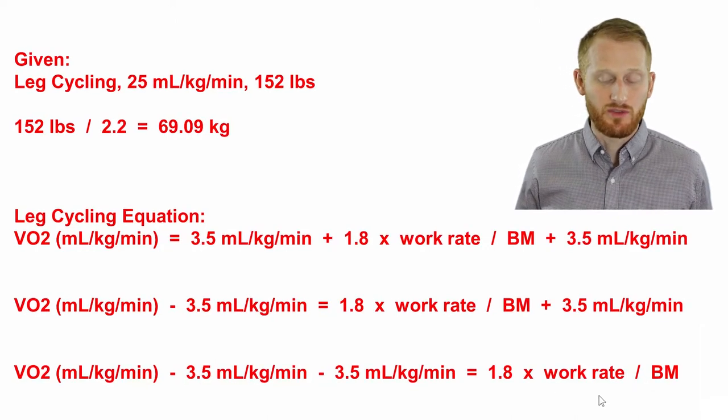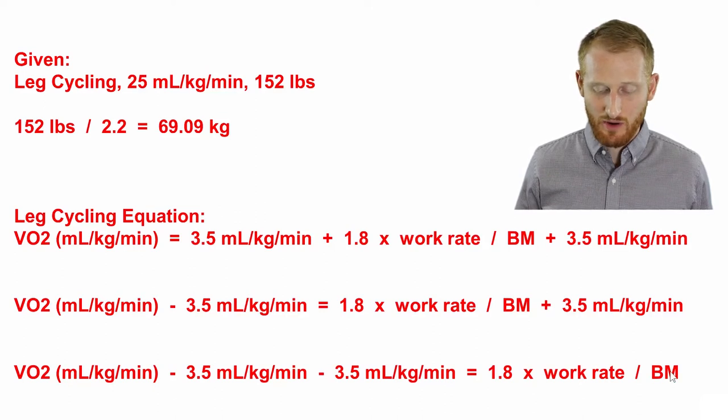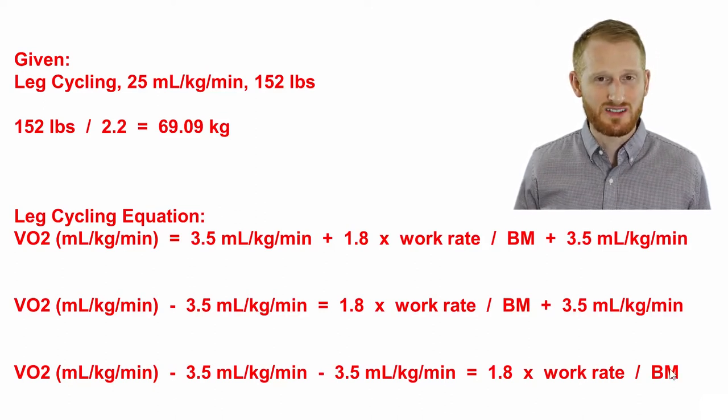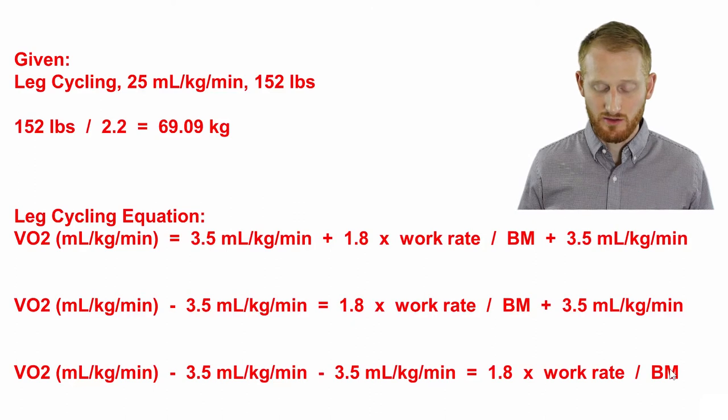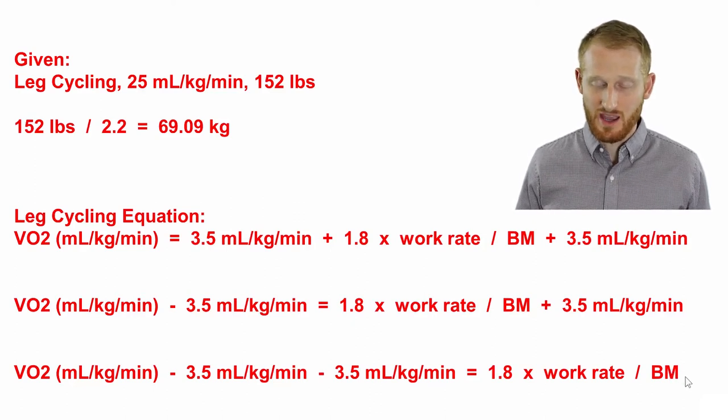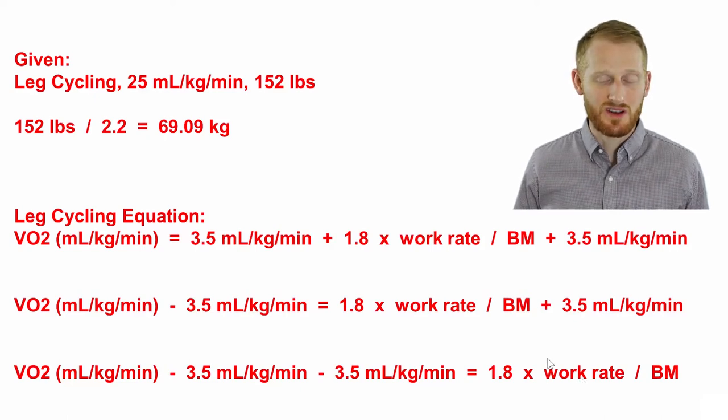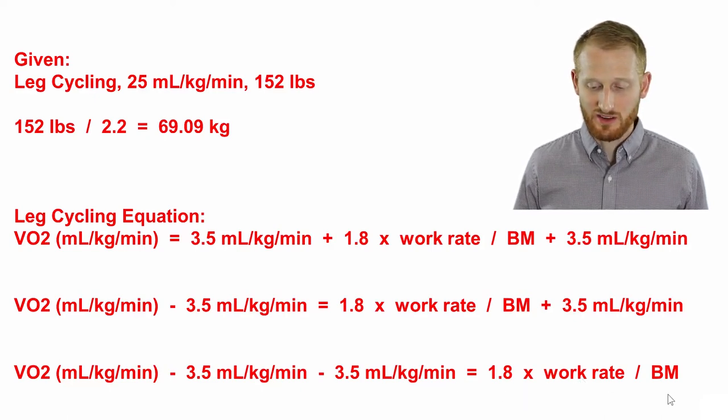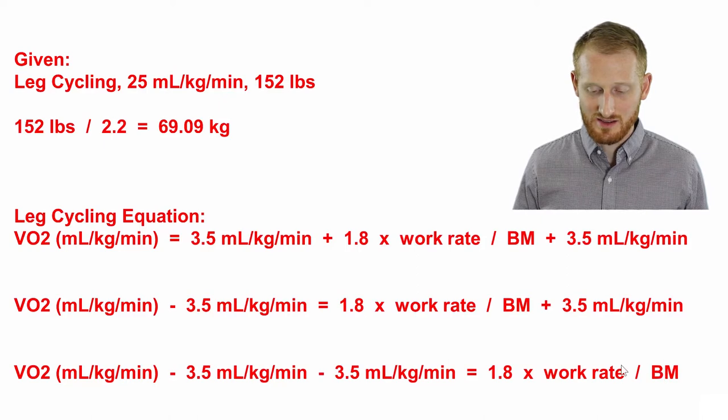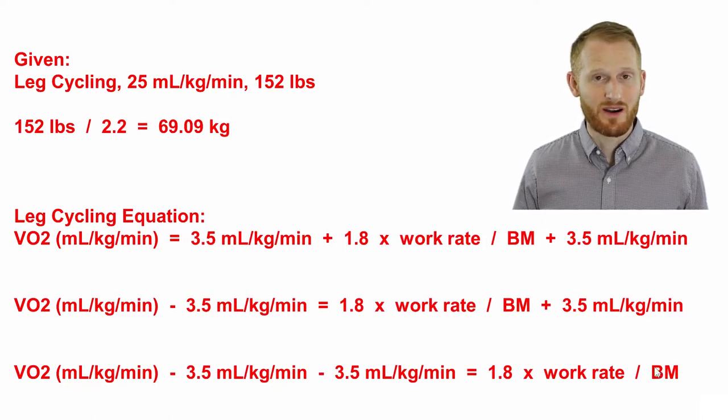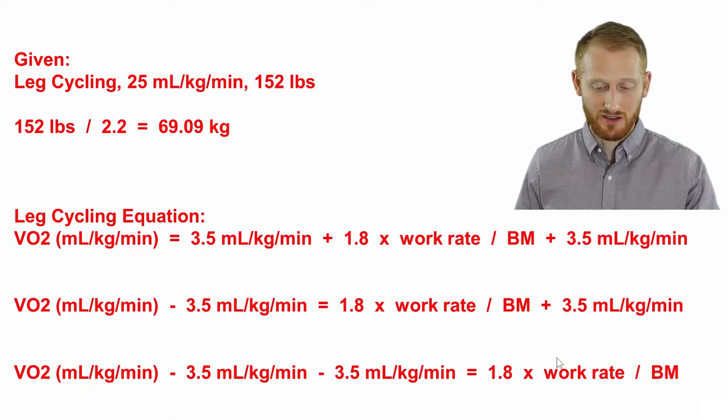Now we need to get rid of both the 1.8 and the body mass. I'm going to do that in one step here, assuming that you're fairly familiar with this basic algebra. The 1.8 is being multiplied against the work rate, so we need to divide that out on both sides of the equation. The body mass, the work rate's being divided by body mass, so we need to multiply that out on both sides of the equation.